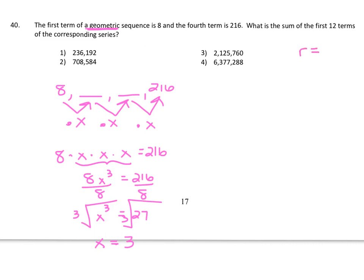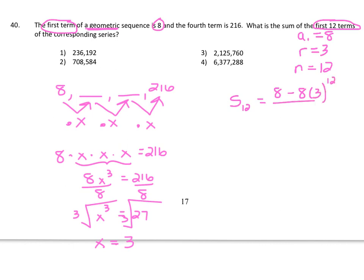Now we know R equals 3 and A sub 1 equals 8. They want the sum of the first 12 terms, so N equals 12. Using our geometric series formula — the sum of the first 12 terms equals the first term minus the first term times R to the N power, all over 1 minus R — and plugging into the calculator gives 2,125,760, which is choice three.